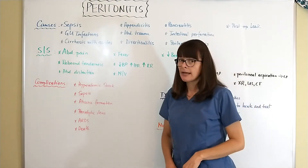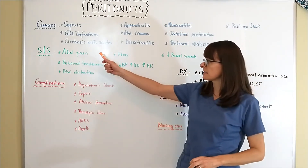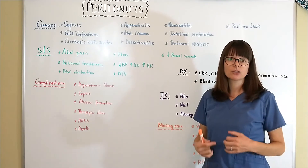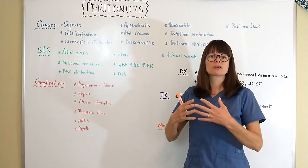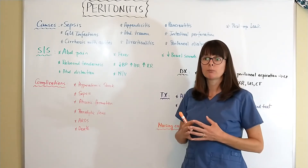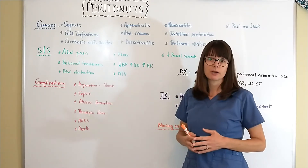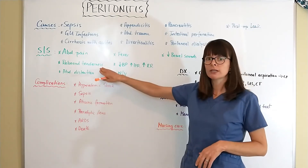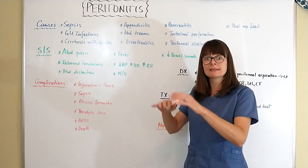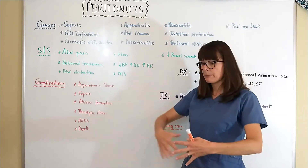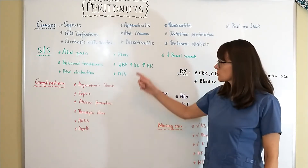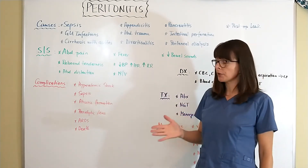A telltale sign of peritonitis is severe abdominal pain. For example, if you are caring for a patient admitted with appendicitis and they develop abdominal pain much more severe than expected, that should raise concern. This pain will be significant, which is why we must monitor patients very carefully. There will also be rebound tenderness — tenderness that occurs not when you press on the abdomen, but when you release that pressure. The patient's abdomen will be distended due to inflammation of the peritoneal cavity.